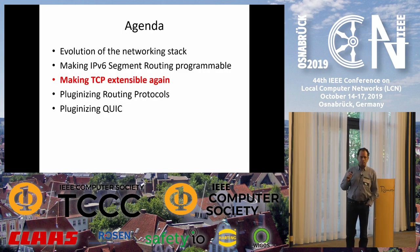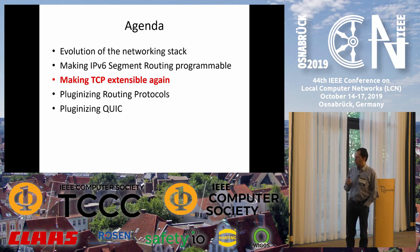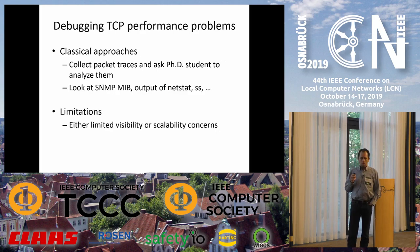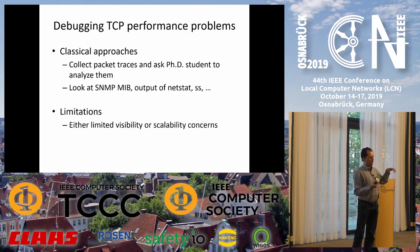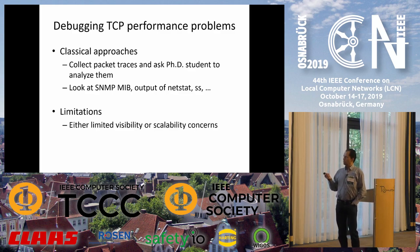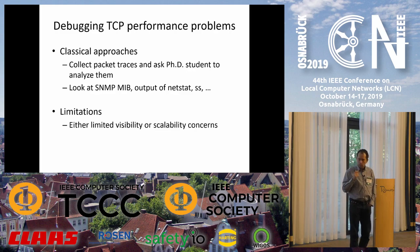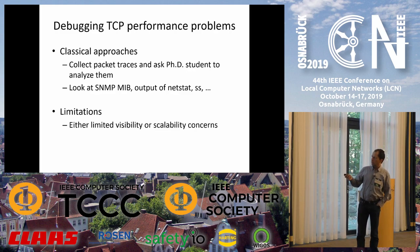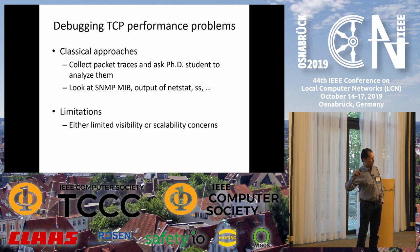So that was IPv6 segment routing as a specific use case. Let's move up the stack and look at TCP, trying to make TCP extensible again. eBPF is a nice way to debug performance problems because it allows you to attach specific bytecode to functions in the Linux kernel to detect any problem. If I have TCP performance problems at a university, the easiest solution as a professor is to collect packet traces and ask a PhD student to spend a few months analyzing them.